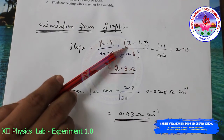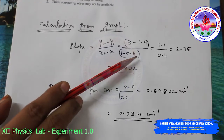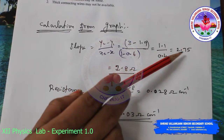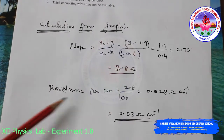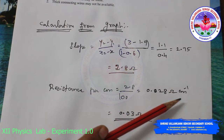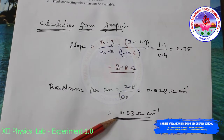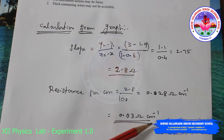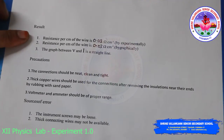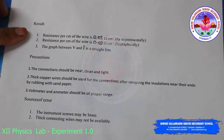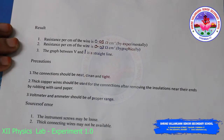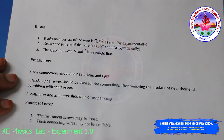Taking two values from the tabular column: (y₂ − y₁) = 1.9 − 0, divided by (x₂ − x₁) = 1 − 0.6, we finally get a slope of 2.75, which we can take as approximately 2.8 ohms. Resistance per centimeter is therefore 2.8 divided by 100, giving 0.028 ohms per centimeter, which we round off to 0.03 ohms per centimeter. The result: resistance per centimeter of the wire is 0.03 ohms/cm, confirmed both experimentally and graphically. We must also maintain certain precautions and account for sources of error while doing the practical.